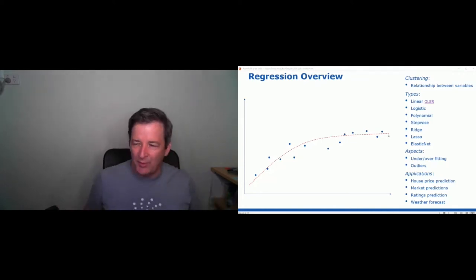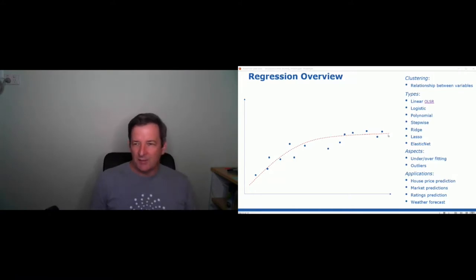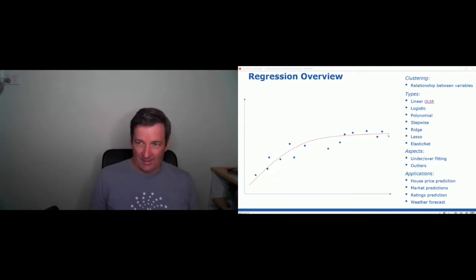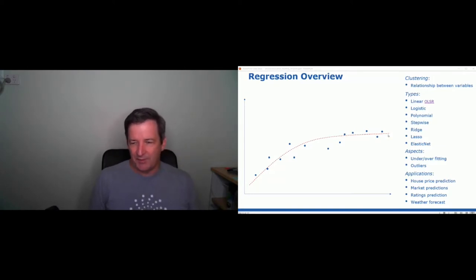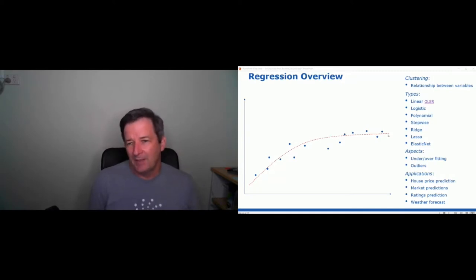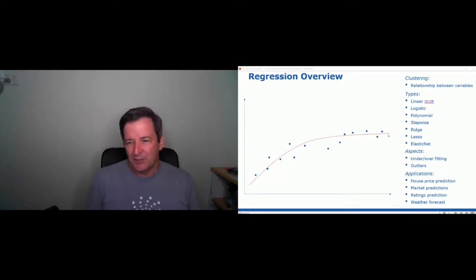The next topic is regression. This is one of the areas in data science that you might want to use for various scenarios. This is when you've got some data and you're trying to find out about that data — properties about it — that might let you use it to do things like prediction, for instance.